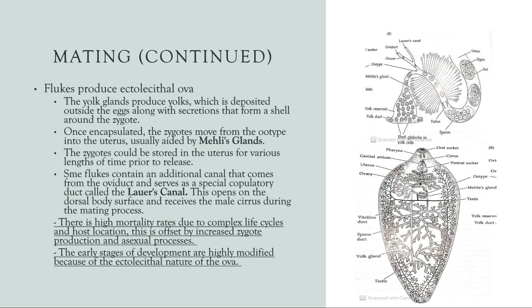The zygotes can be stored in the uterus for various lengths of time prior to release. Some flukes contain an additional canal that comes from the oviduct and serves as a special copulatory duct called Laurer's canal, which is right here. This opens on the dorsal body surface and receives the male cirrus during the mating process. When you think of sexual reproduction of flukes, there is a high mortality rate due to their complex life cycles and host location. These flukes are typically liver flukes, which are usually in the body of sheep. This has an offset which increases zygote production and asexual processes. The early stages of development are highly modified because of the ectolecithal nature of the ova.